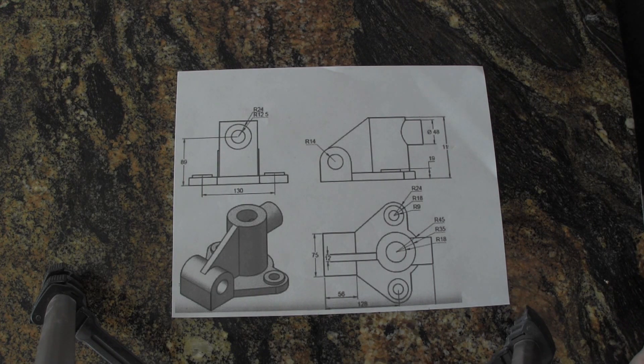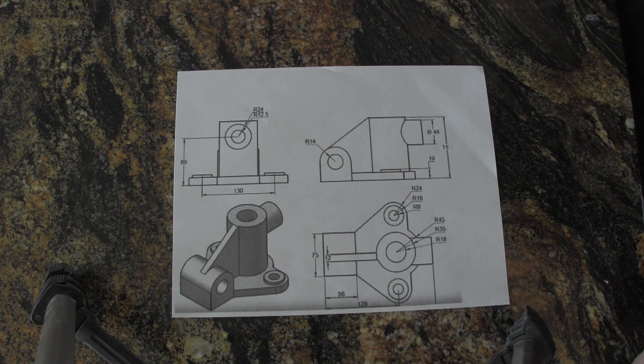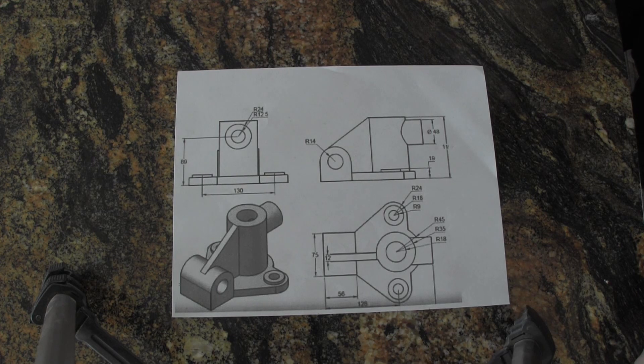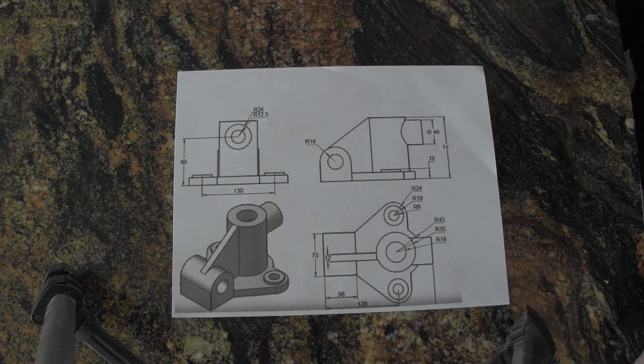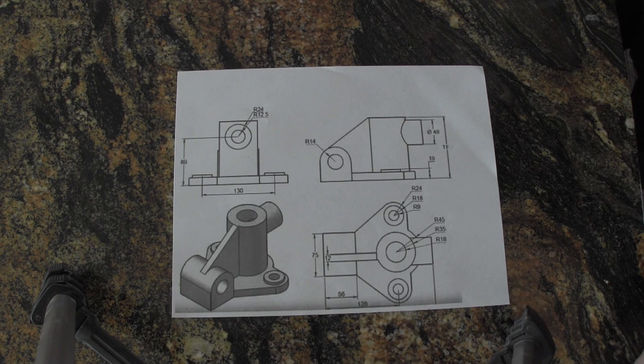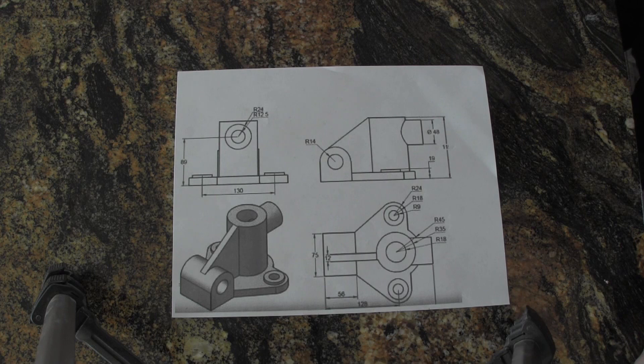He just came in and handed you this and said he needs casting for it. Some of the questions you might need to ask him is first about the finish. What areas are machined? Most drawings will have areas marked off. You can assume all the holes are machined, but some faces may need to be machined. So you need to ask him about that.